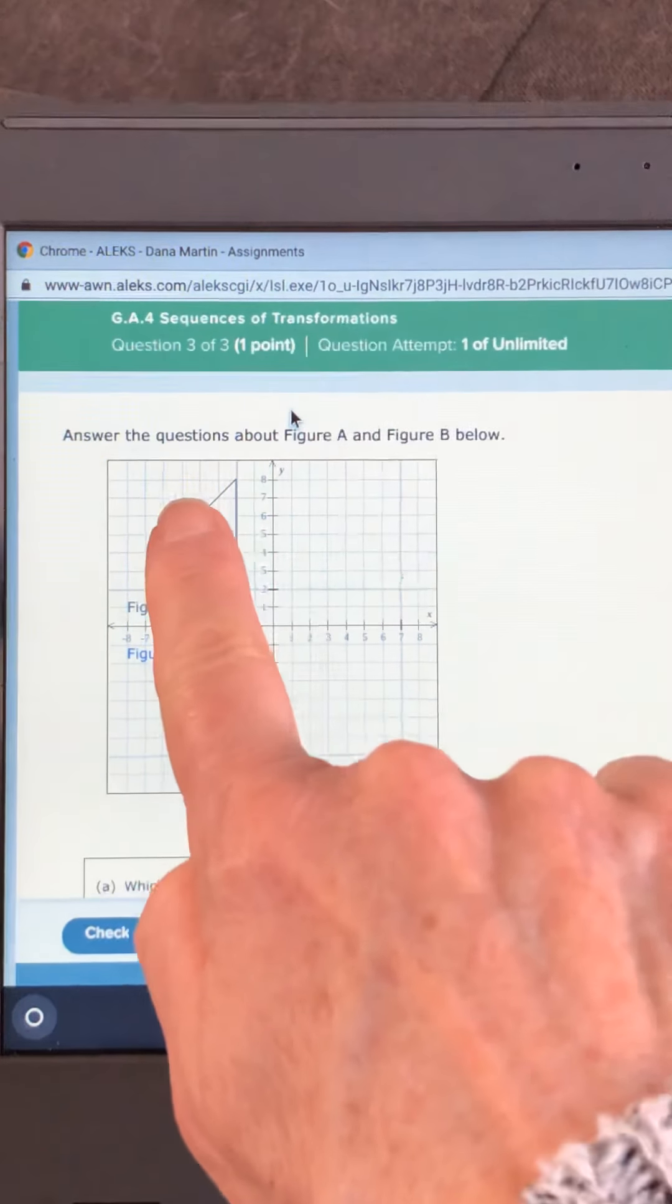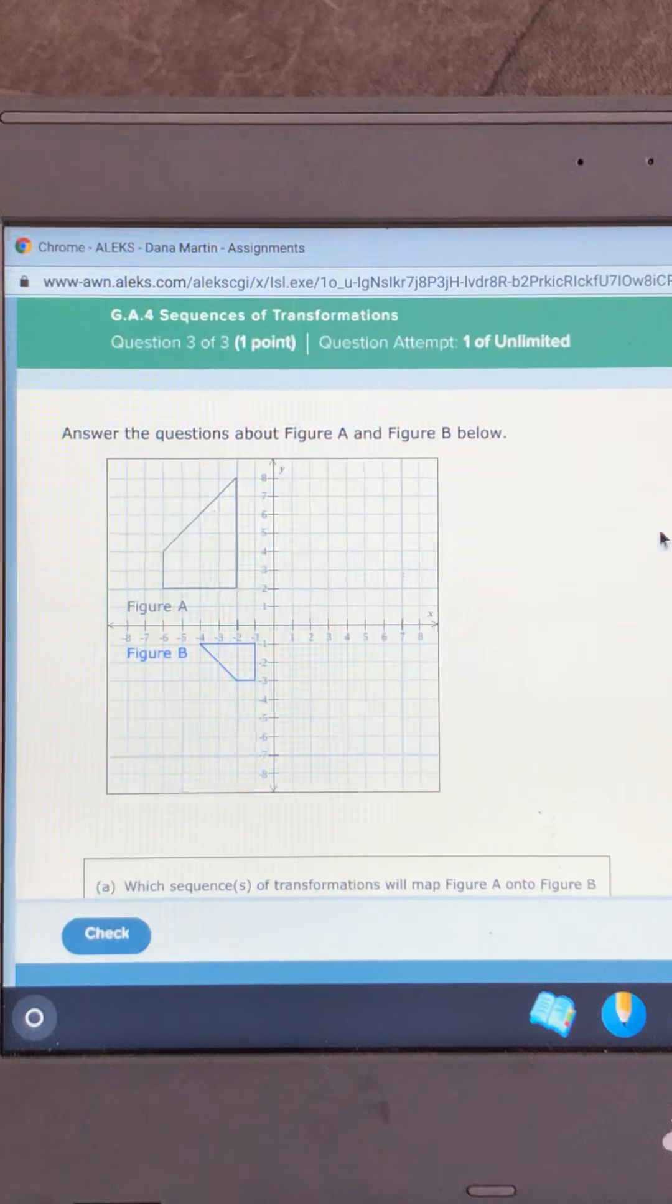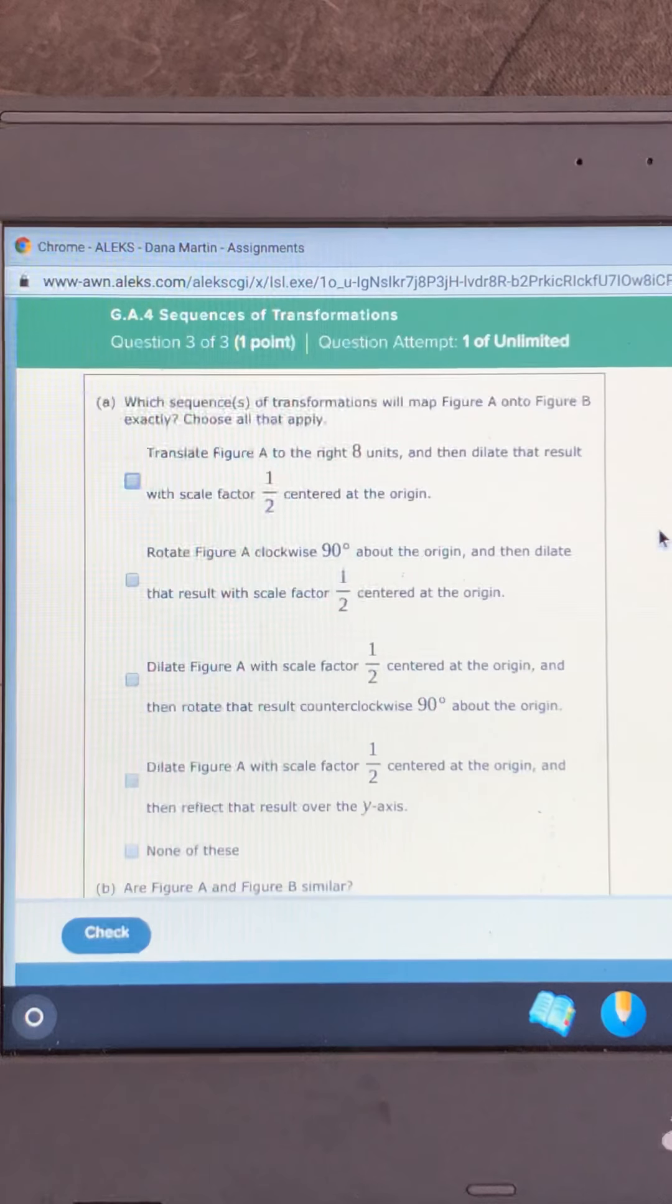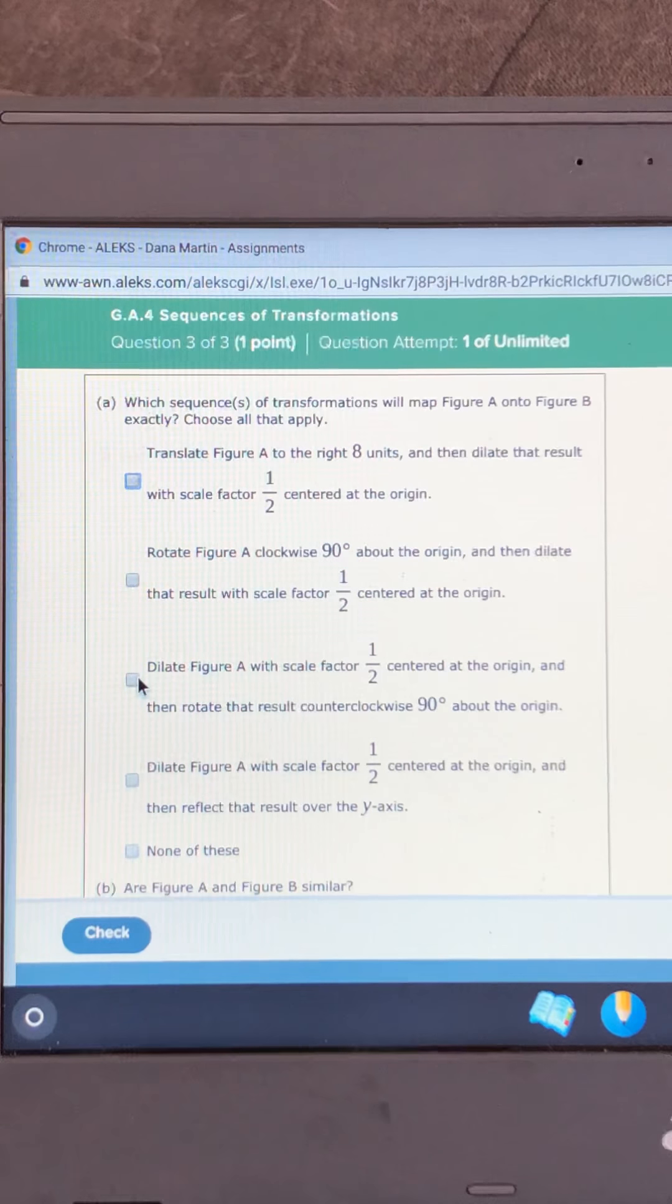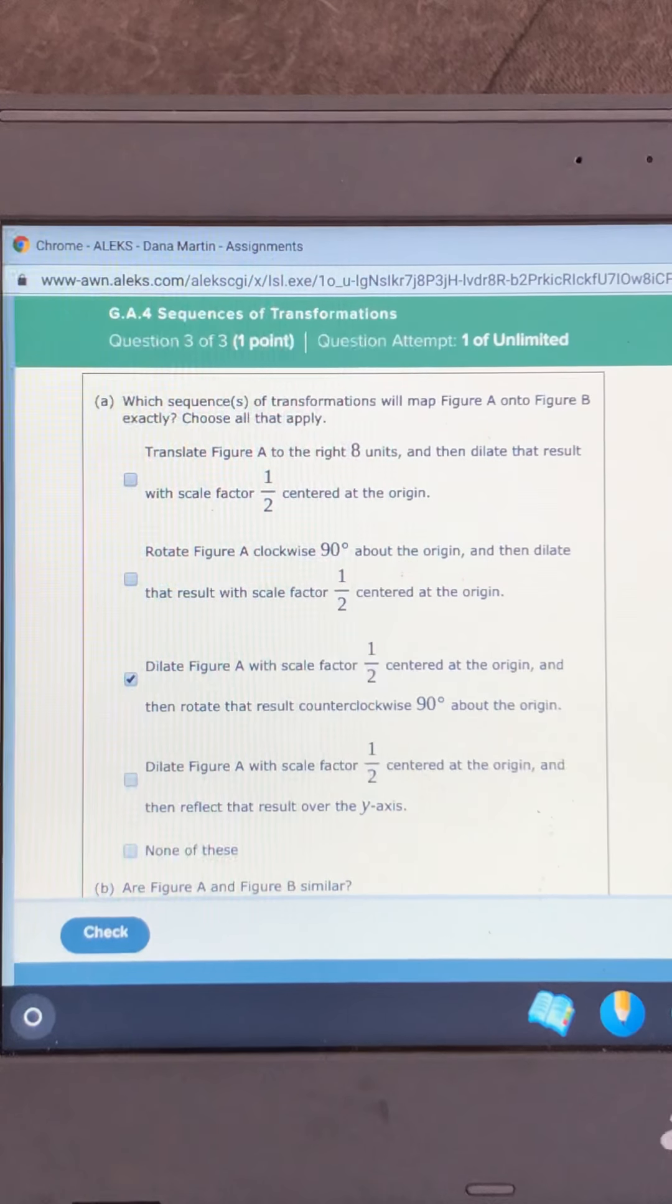So if we reflect that over the y-axis, there's no way. So it is the one where you are dilating with a scale factor of one half and rotate that result counterclockwise 90 degrees about the origin.